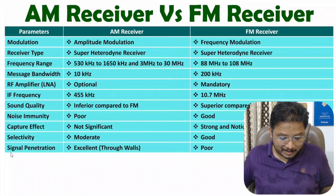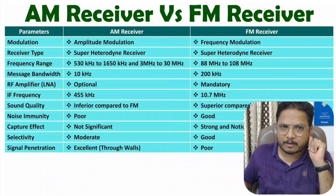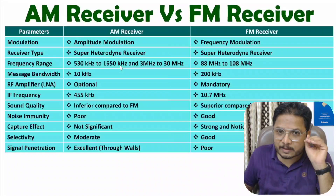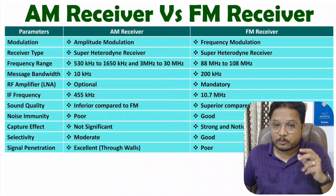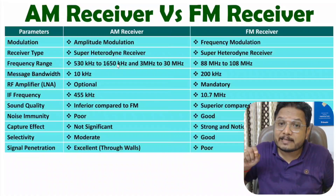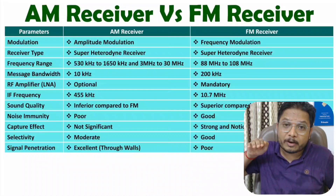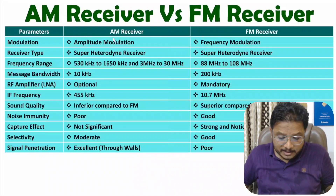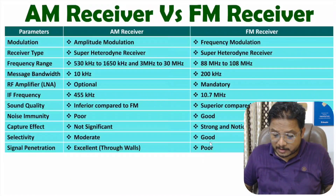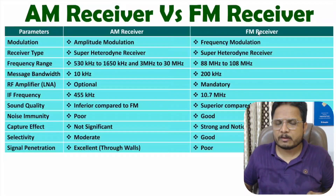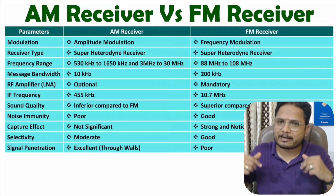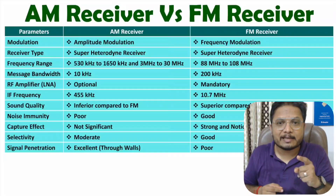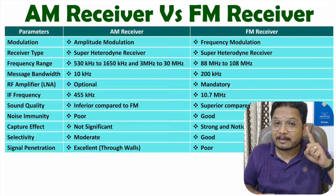The next parameter is signal penetration. AM receiver has a frequency range of 530 kHz to 1650 kHz, and these frequencies can easily penetrate through walls. These signals propagate via ground wave propagation, so signal penetration through walls with AM receiver is excellent. With FM receiver, there will be distortion if obstacles are present — FM is commonly used in cars on open space, but AM signals can be received inside a home because they penetrate through walls.